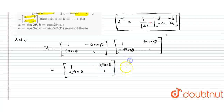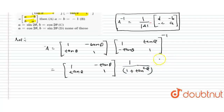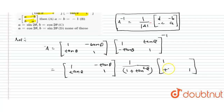Let's find the determinant of this matrix, which is 1 times 1, so 1 plus tan squared theta. Again we write the same matrix but we need to change the diagonal elements by swapping them, and change only the signs of the off-diagonal elements — writing plus tan theta and minus tan theta.